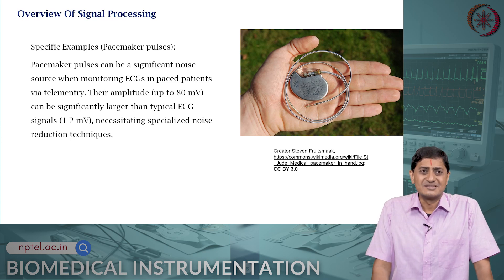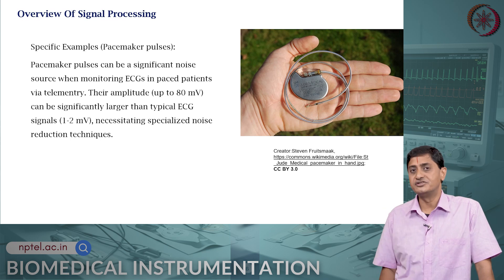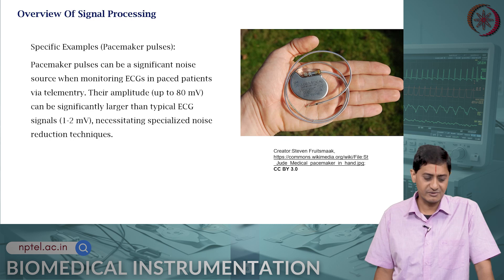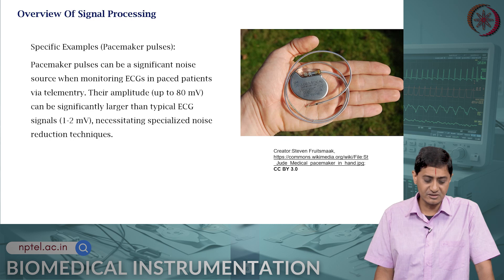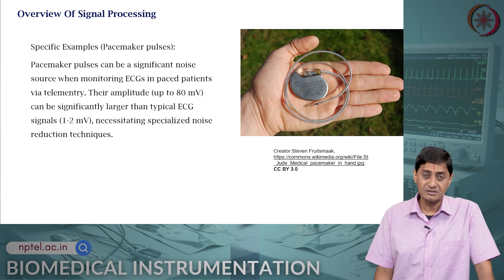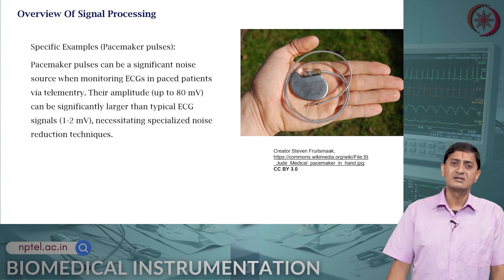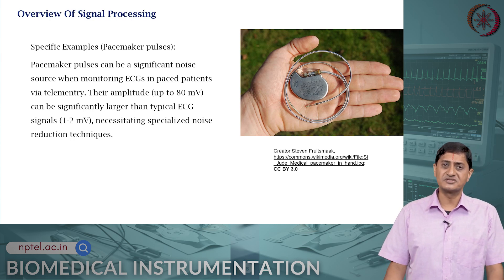For example, pacemaker pulses can be a significant noise source when measuring ECG. But the pacemaker is needed for the patient — you cannot turn it off just to take a clean ECG measurement. Artificial pacemaker pulses can be significantly larger in amplitude than the ECG signal. That means you need highly specialized noise reduction or signal processing techniques to handle them.